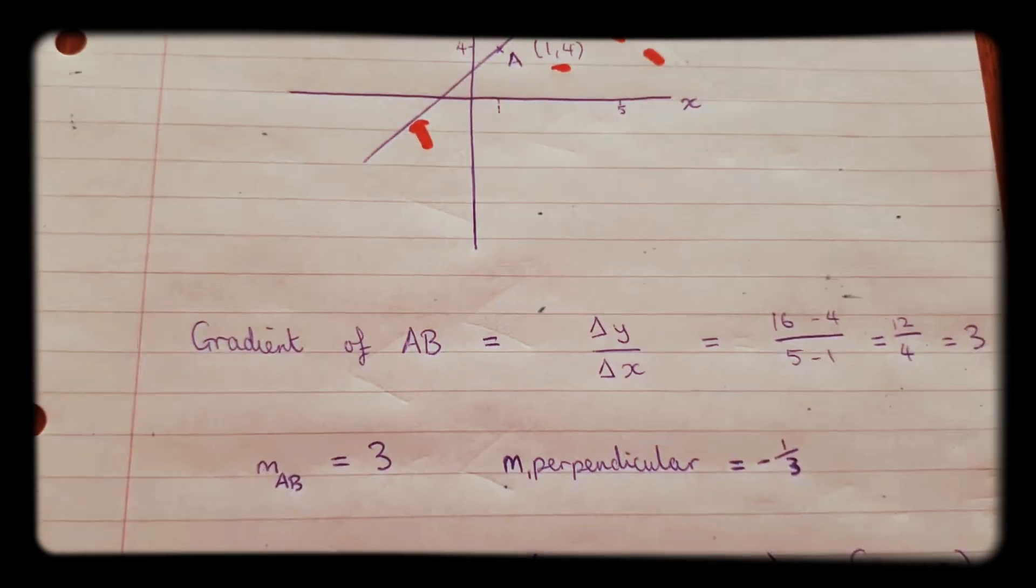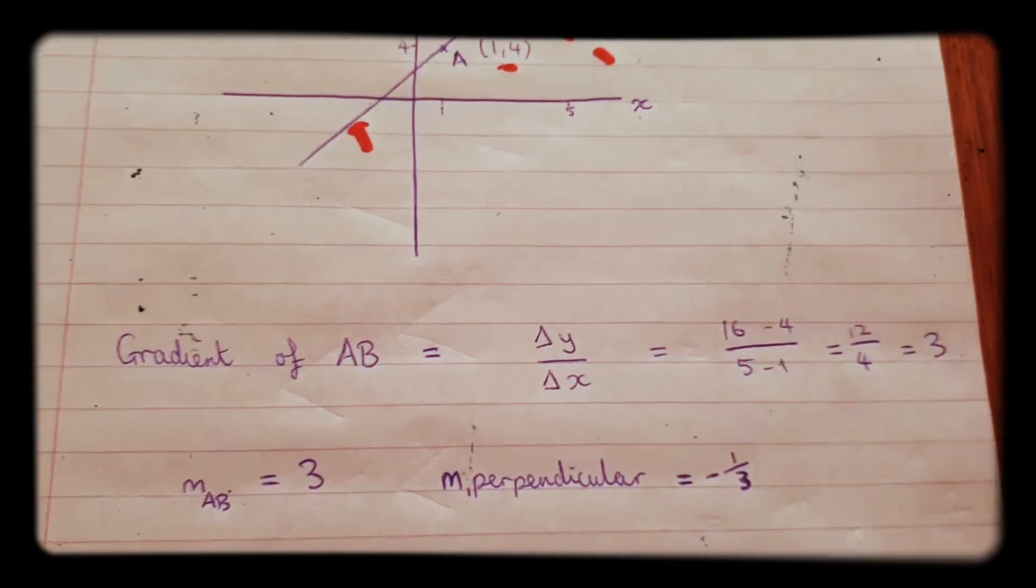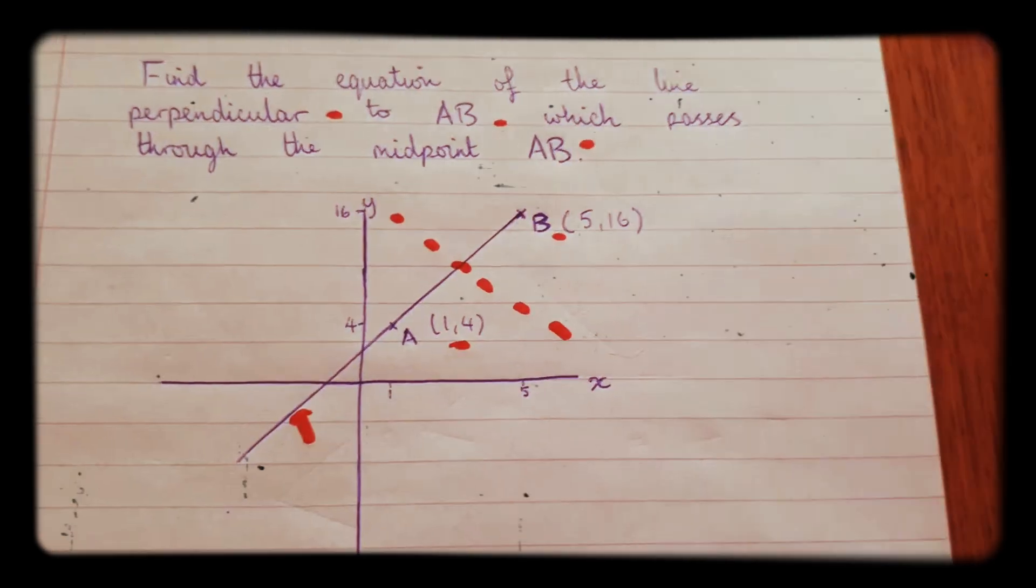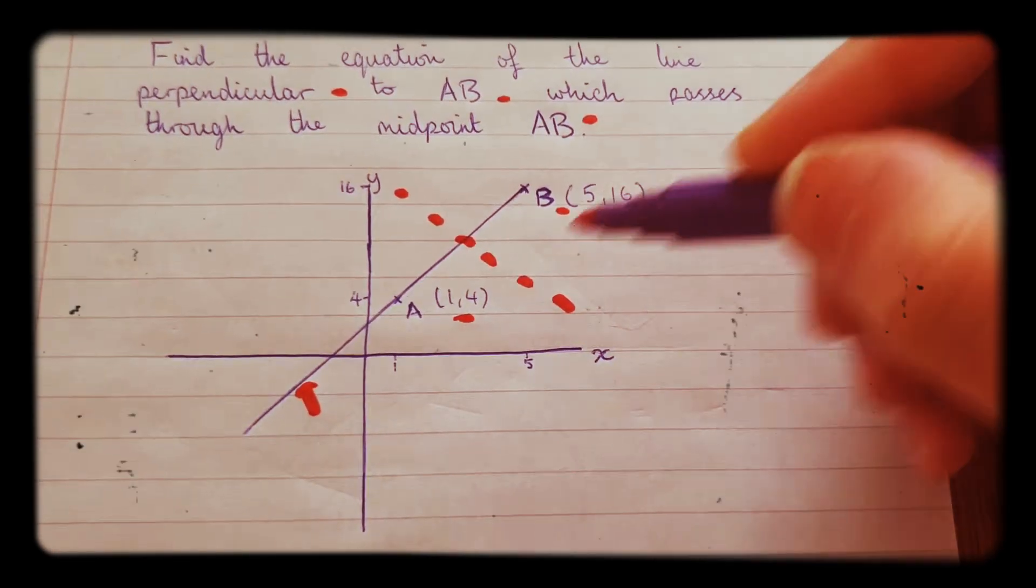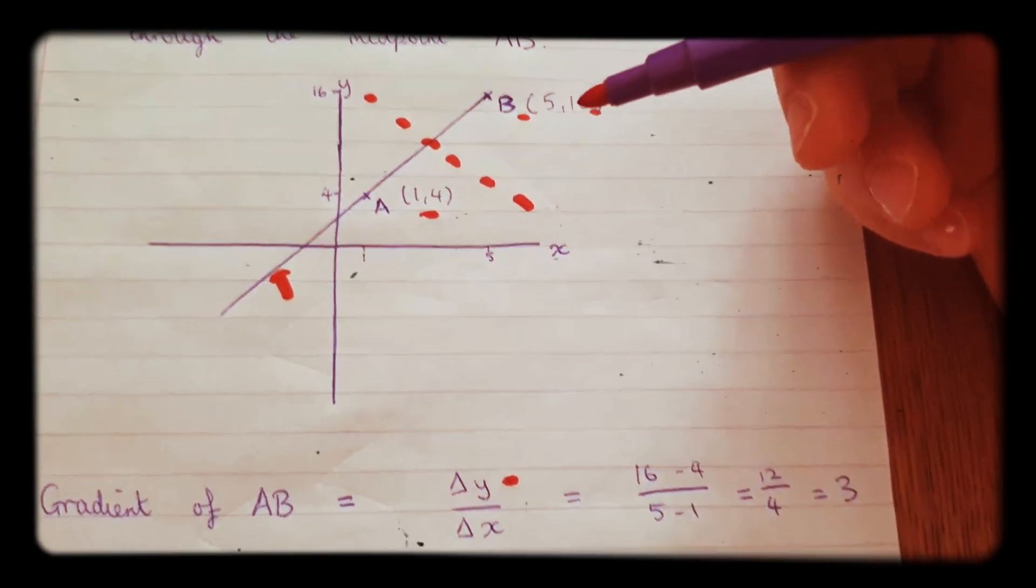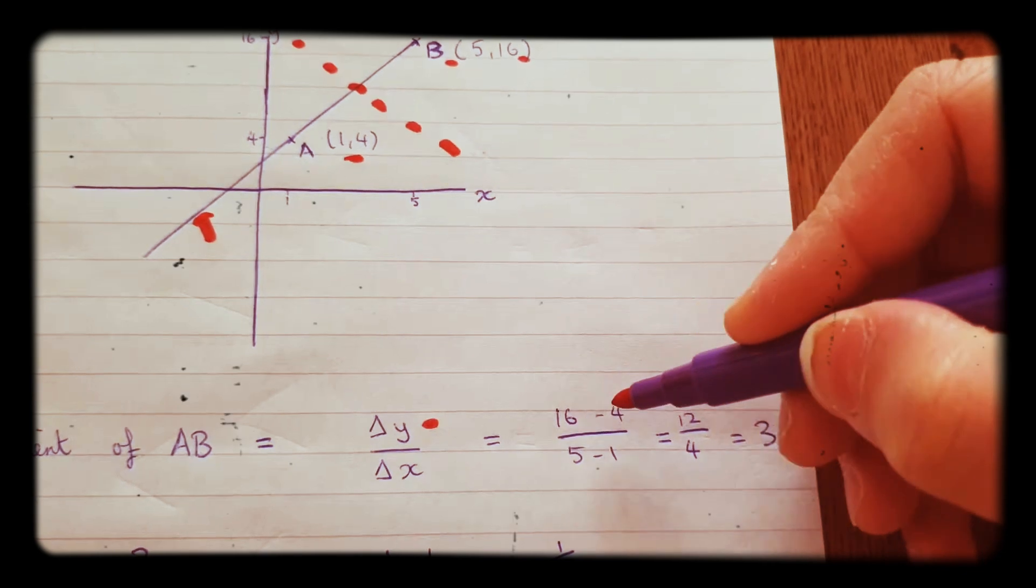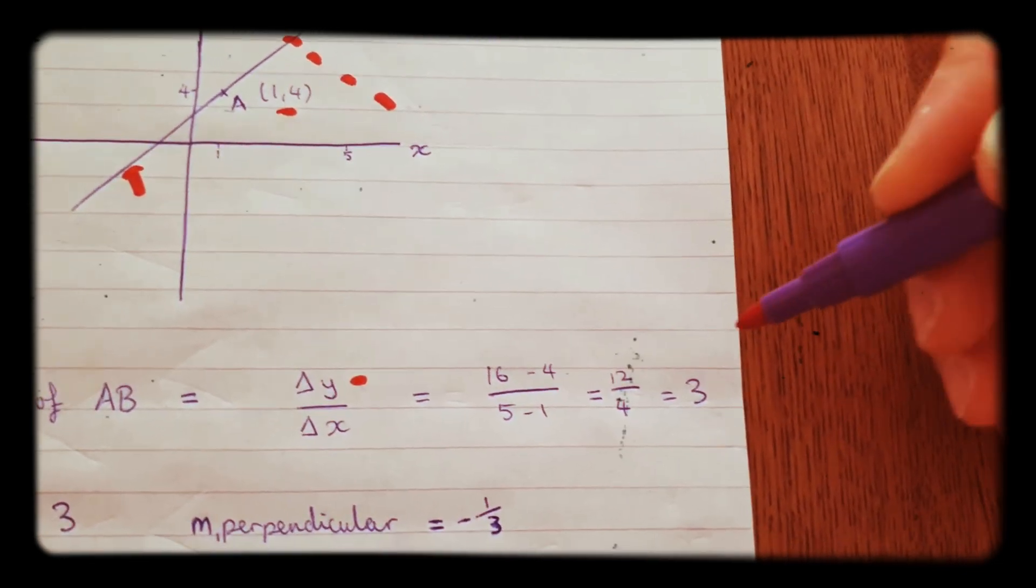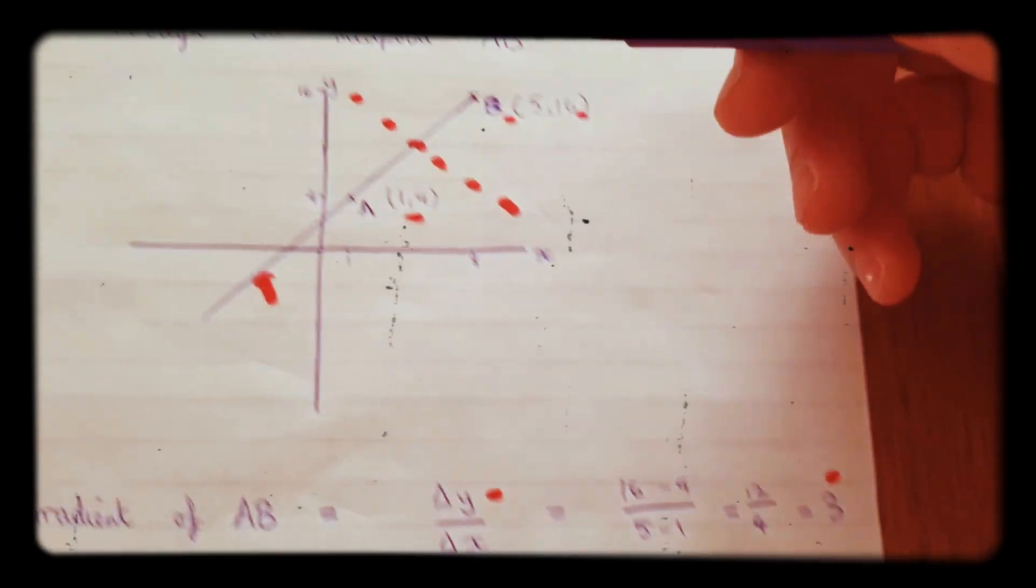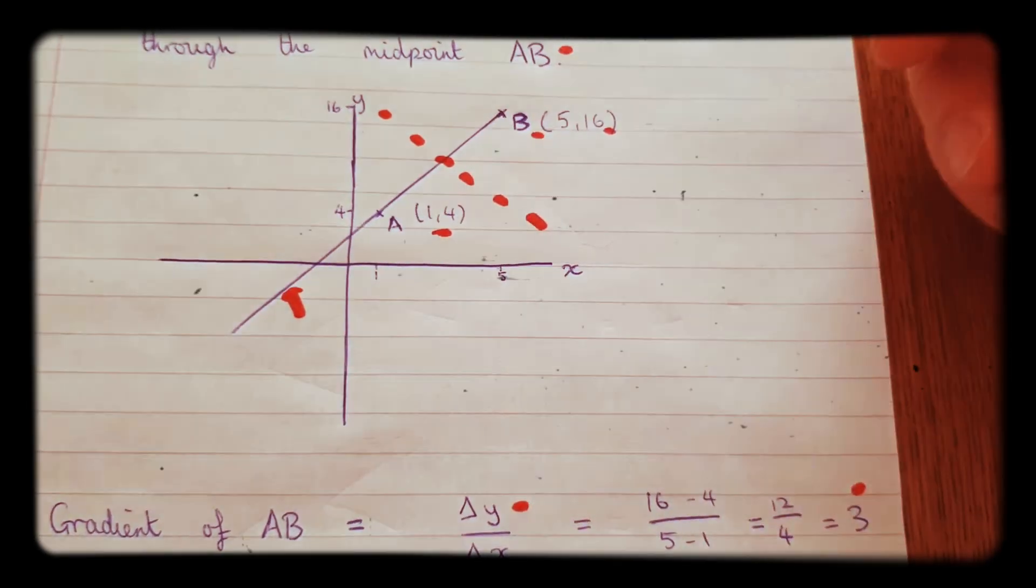So in order to work out the gradient, you do the change in Y over the change in X. So the Y's are 16 and 4, and the X's are 5 and 1. So the change in Y is 16 minus 4, and the change in X is 5 minus 1. And you will get 3 as the gradient of AB.